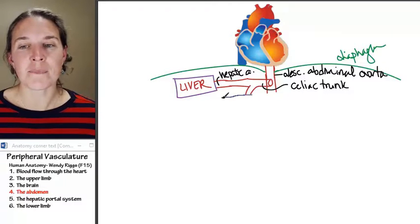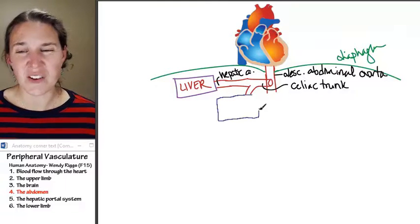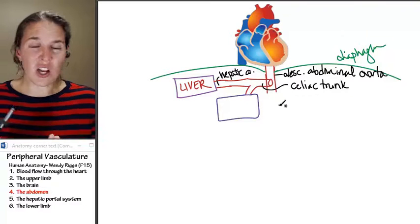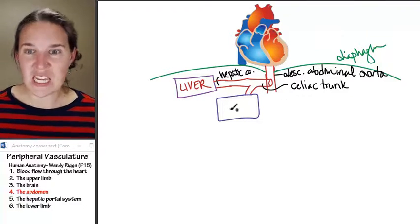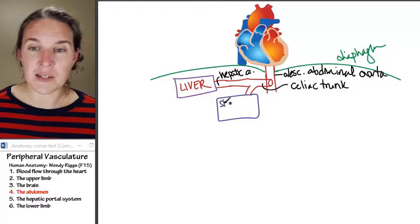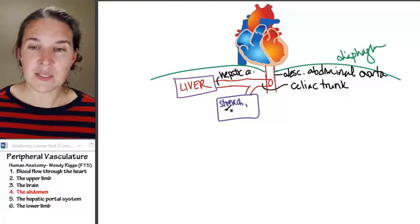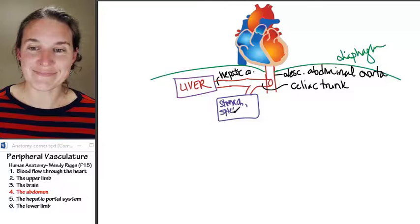It also branches into a bunch of other vessels. But we're just going to go, awesome, there's a bunch of named vessels that feed the following structures: the stomach, the spleen, and the pancreas.